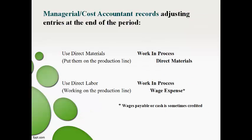The managerial or cost accountant makes adjusting entries at the end of the period to move product costs to work in process so they are not expensed in the period incurred. The amount of the direct cost is easy to determine. The direct materials moved to the production line and the expense of direct labor working is moved from these accounts to work in process. Manufacturing overhead is an indirect cost and it is not possible to determine the actual amount used to make products.